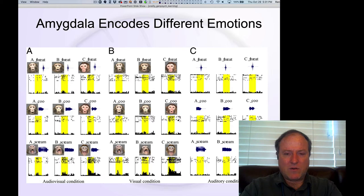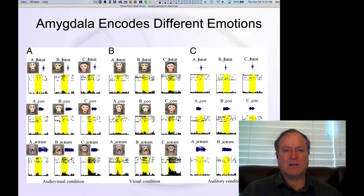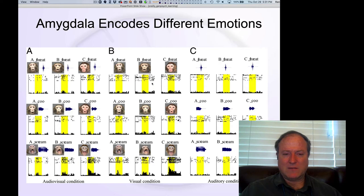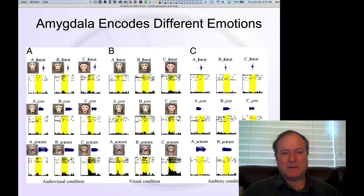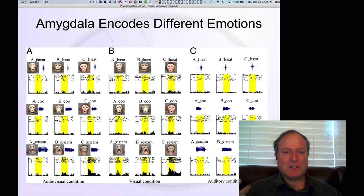This is a recording from responses to seeing faces of other monkeys and hearing sounds indicating different expressions — threat, positive responses like coos, and negative scream-type cases — showing different tuning for these different dimensions. The amygdala overall statistically has about 80% negative outcome encoding and about 20% more positive.